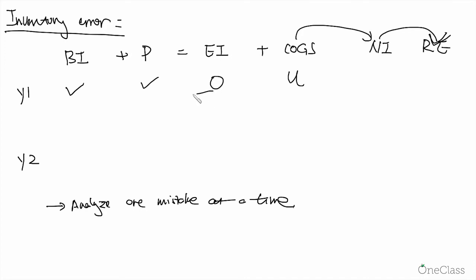And another thing you have to know is that whenever we have an error in the ending inventory, the ending inventory will be the beginning inventory for the next year. So this overstatement in the ending inventory in year one is actually an overstatement in beginning inventory in year two.